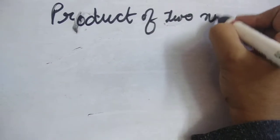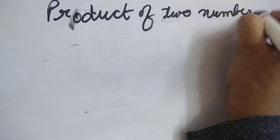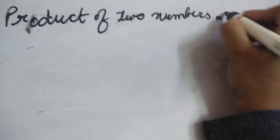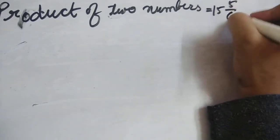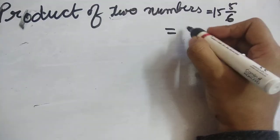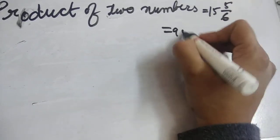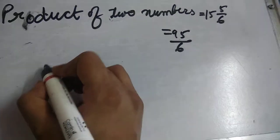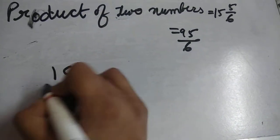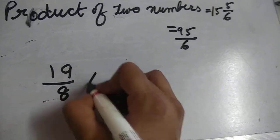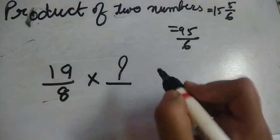Two numbers equals to 15 and 5/6. So simplify this: 15 times 6 plus 5 equals 95/6. So the first number is 19/8 and we have to find the other number, this value.